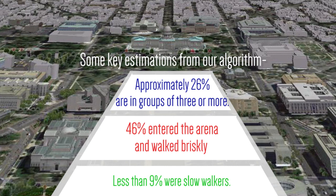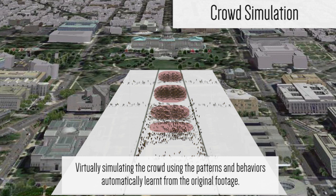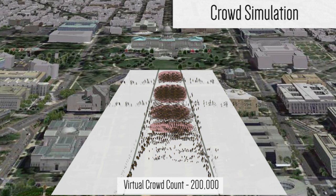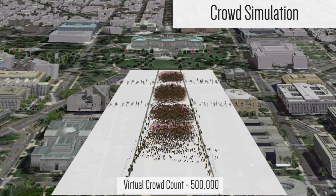Far from being just a tool to analyze crowd events in the past, the algorithms allow us to simulate crowd behavior and make predictions about future events. We simulate the inauguration crowd with varying numbers of pedestrians. In the future, this technology may be used in real-time to assess potential danger areas.